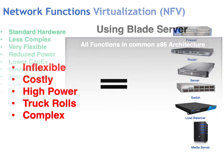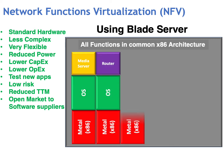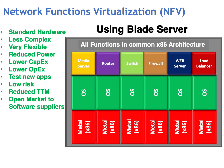So they would like to reduce this complexity. One way of doing this would be to use a standard x86 architecture — for example, a blade server. By using a blade server, we would be using standard hardware, which would give us a less complex environment, providing flexibility, reduced power consumption, lower CapEx, lower OpEx. We would also be able to test new applications with a lower risk, reduce time to market, and open up the market to many other software suppliers.